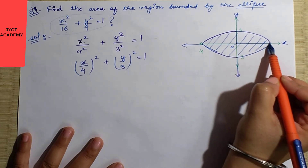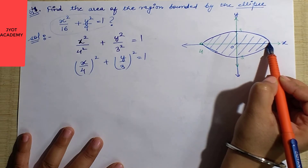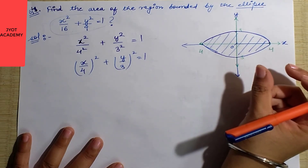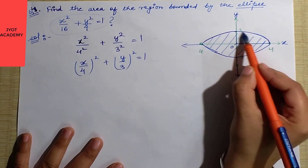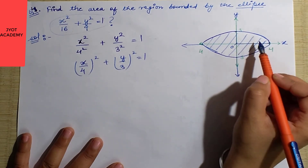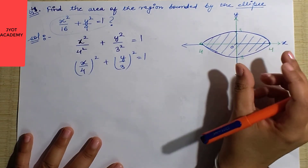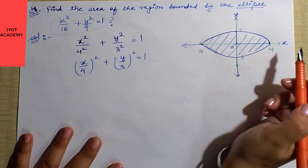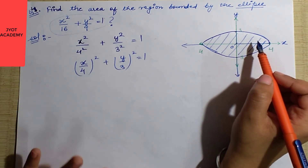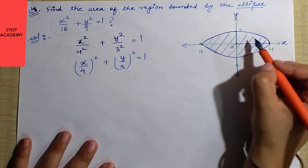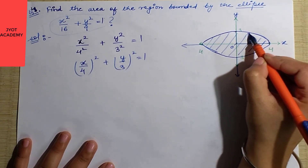If you were asked only for the first quadrant area bounded by this ellipse, then only this portion would be required. We will still focus on the first quadrant because it is always positive for every value, making our calculations much easier.